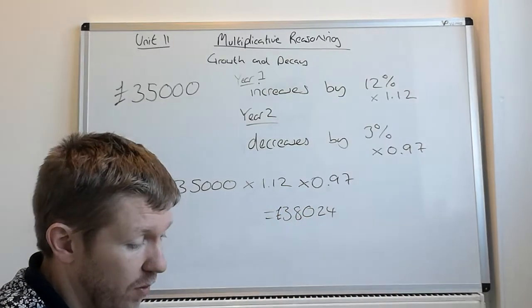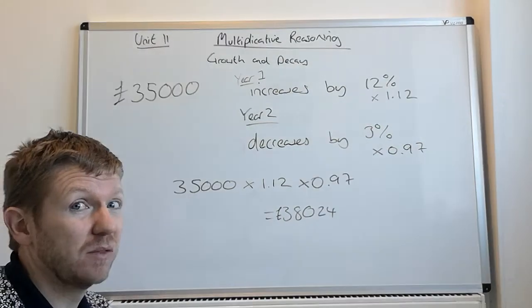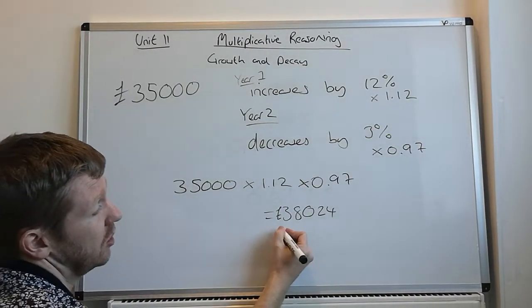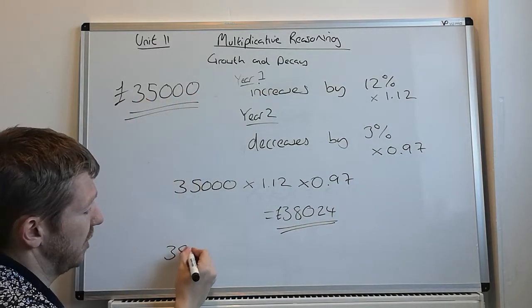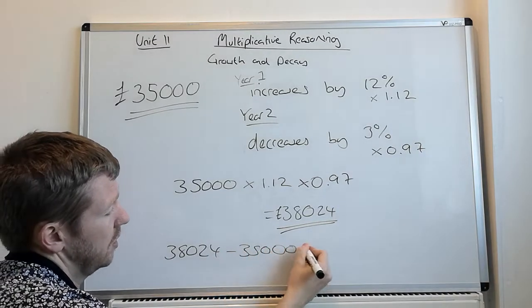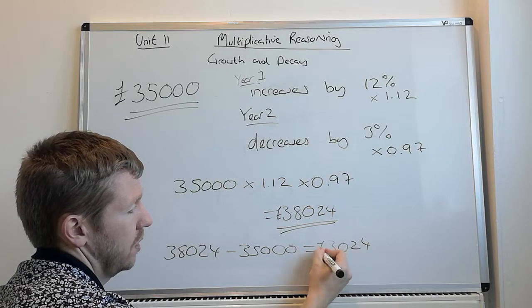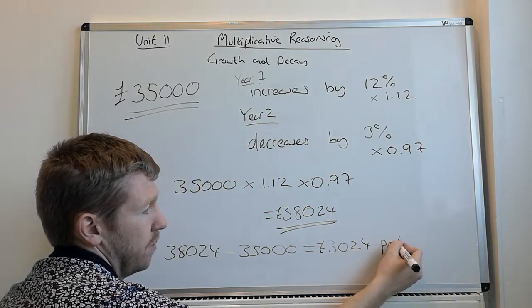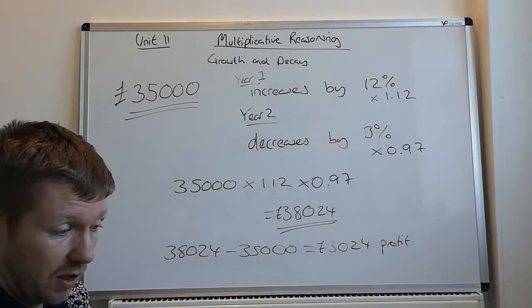Times by 1.12 times by 0.97 gives you an answer of 38,024 pounds. Now, the question could also ask, how much profit has he made? You'd look at this number here and this is where he started from. You'd do 38,024 take away 35,000, gives you 3,024 pounds profit or increase. Hopefully that makes sense for that one.